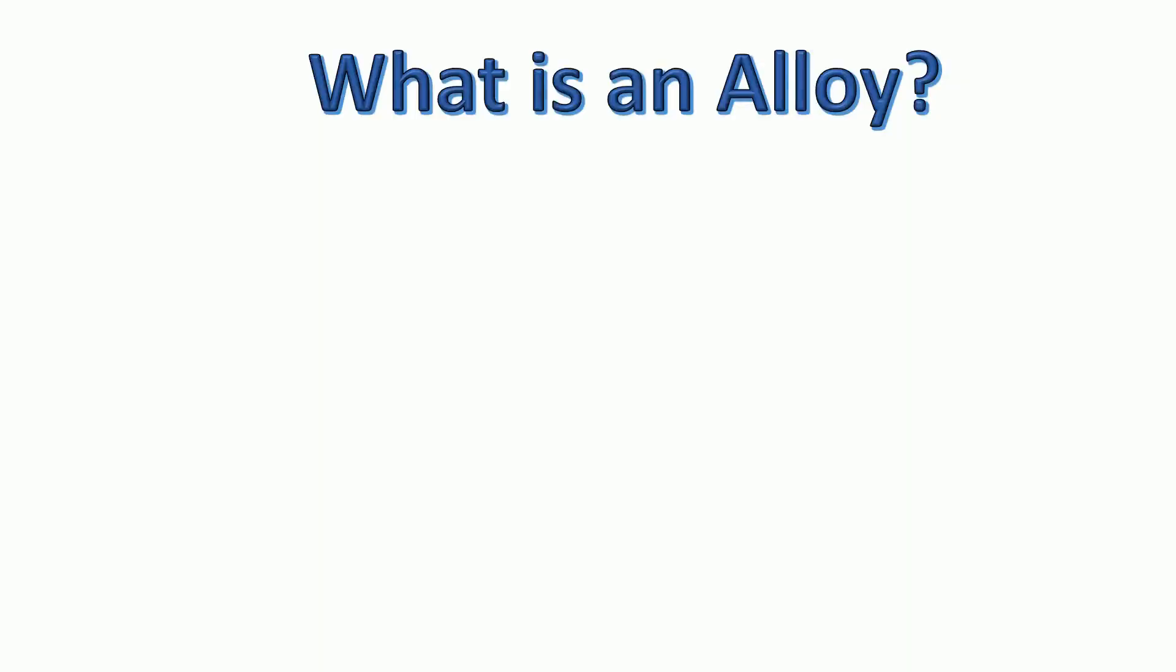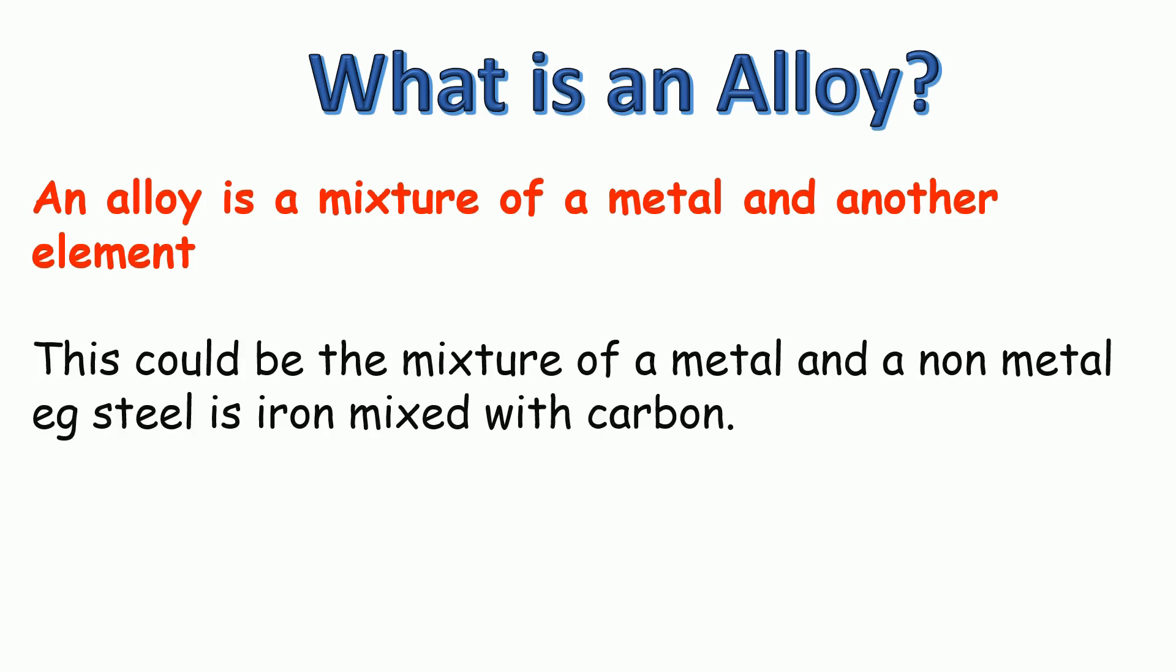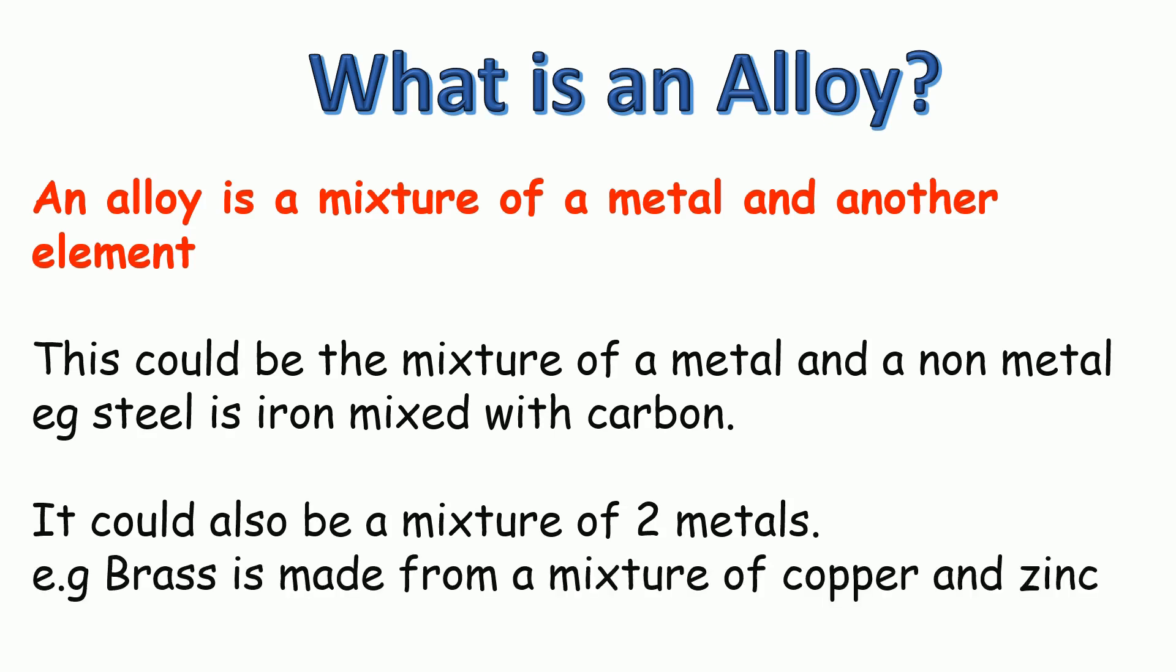First of all, we need a clear definition of what an alloy actually is. An alloy is a mixture of a metal and another element. This could be the mixture of a metal and a non-metal - for example, steel is iron mixed with carbon. It could also be a mixture of two metals. For example, brass is made from a mixture of copper and zinc.